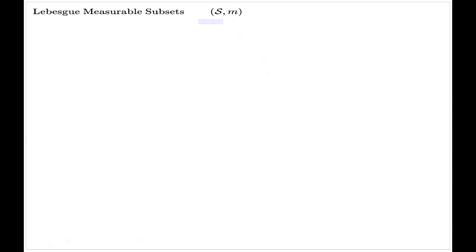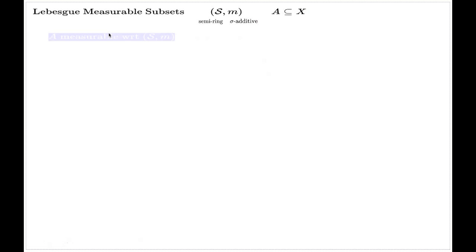S is a semi-ring, and M is a sigma-additive measure. The definition goes like this: a subset of my universal set X is called measurable, and sometimes you may emphasize explicitly that it's measurable with respect to this particular couple S, M.